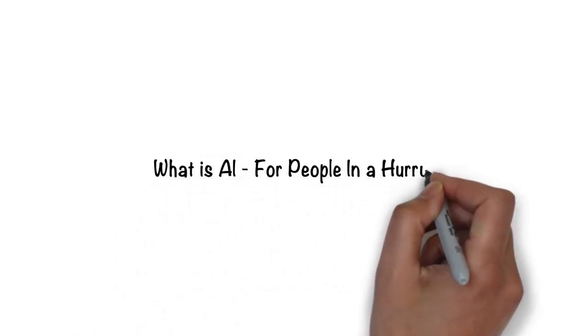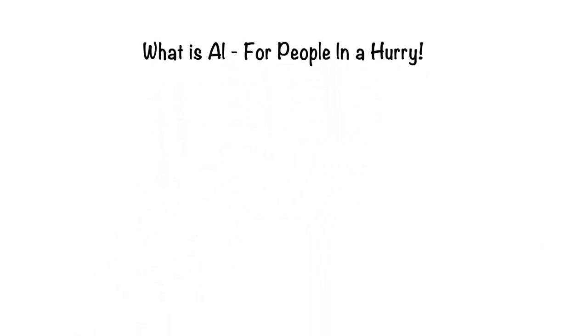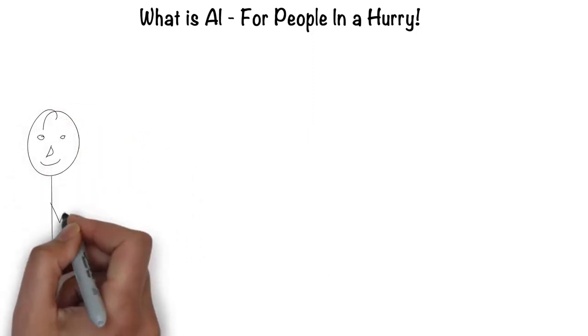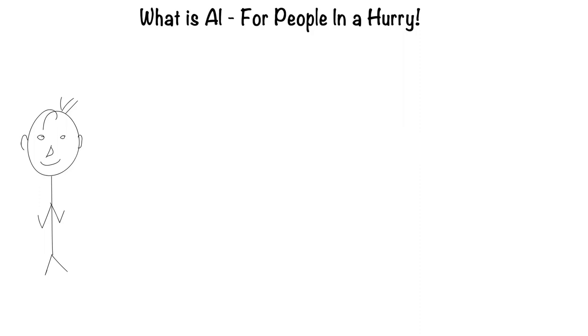Artificial intelligence for people in a hurry. The easiest way to think about artificial intelligence is in the context of a human. After all, humans are the most intelligent creatures we know of.